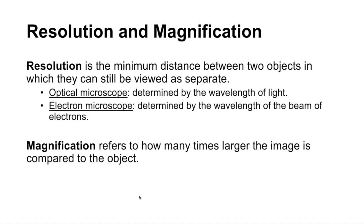Resolution is the minimum distance between two objects at which they can still be viewed as separate — that's your key definition to learn, and you could turn it into a flashcard. With optical microscopes, resolution is determined by the wavelength of light; with electron microscopes it's determined by the wavelength of an electron, which is shorter than visible light — that's why electron microscopes have a higher resolution. Magnification refers to how many times larger the image is compared to the actual object.